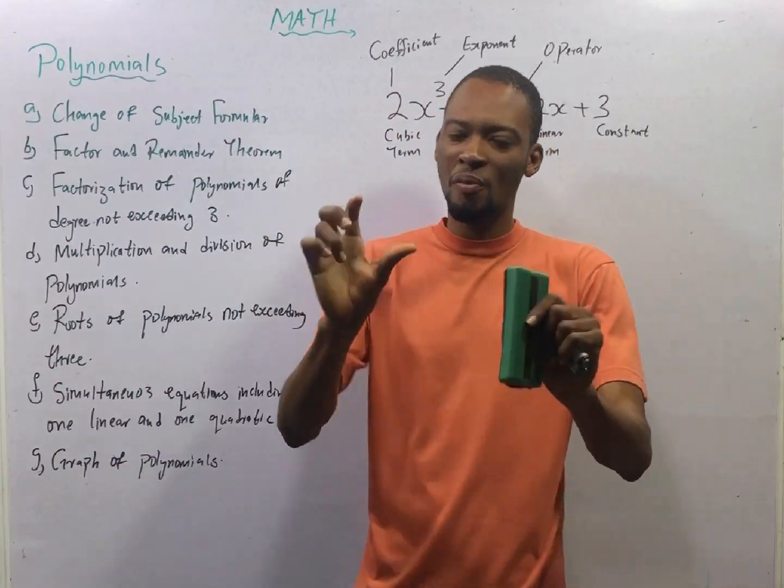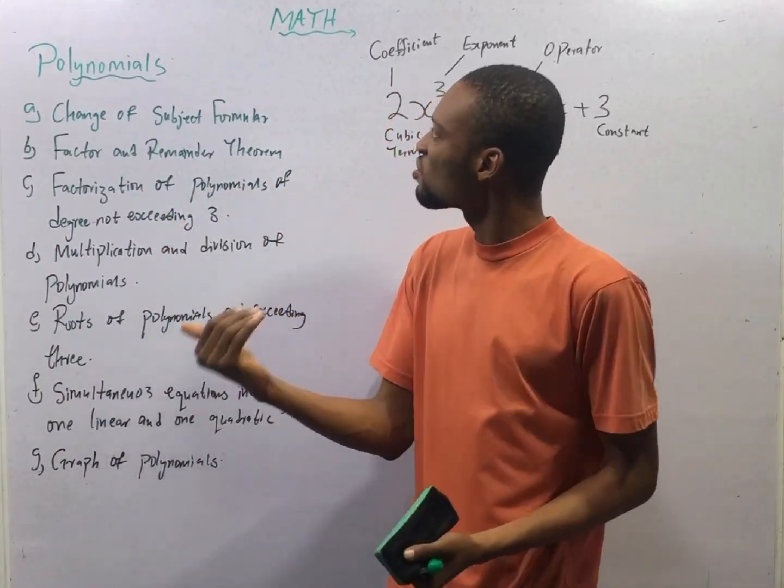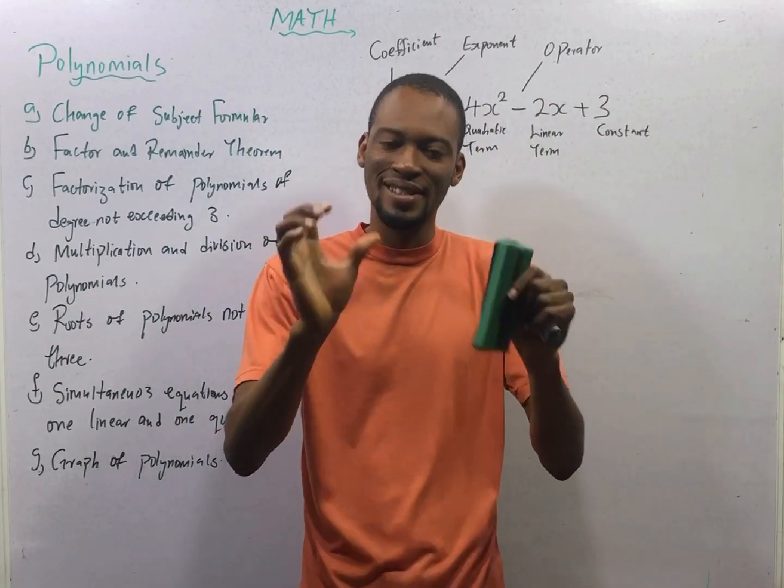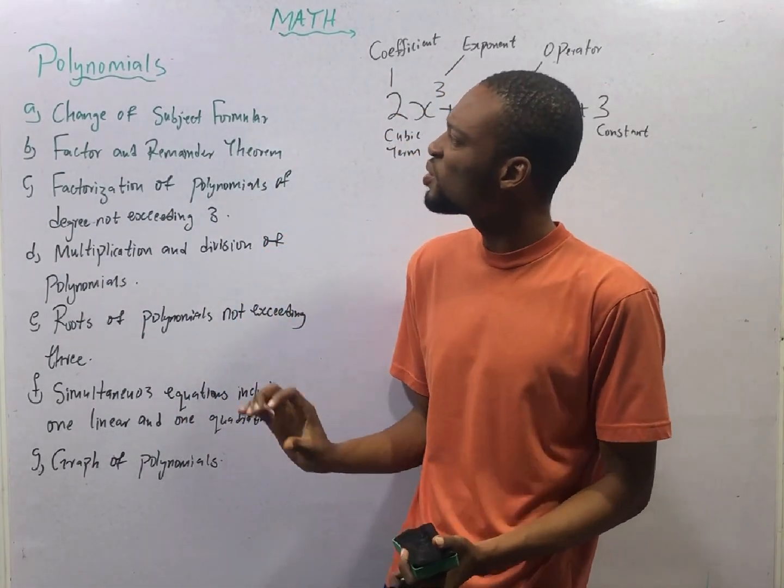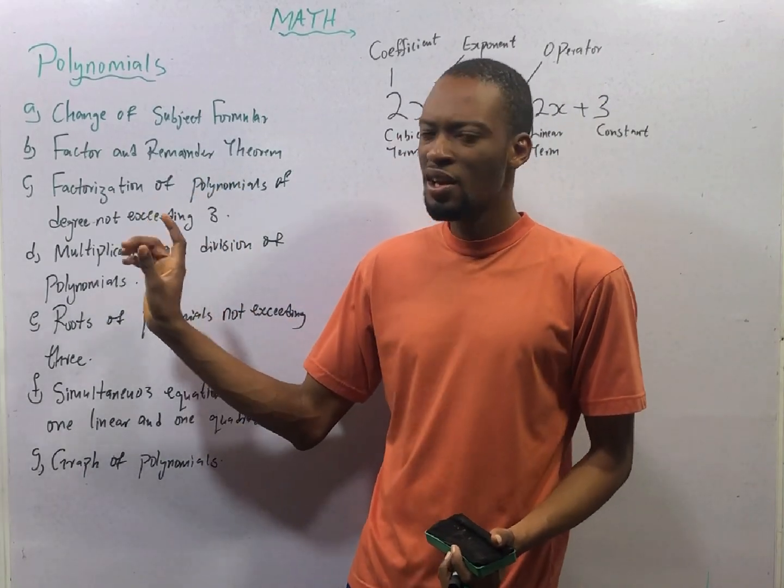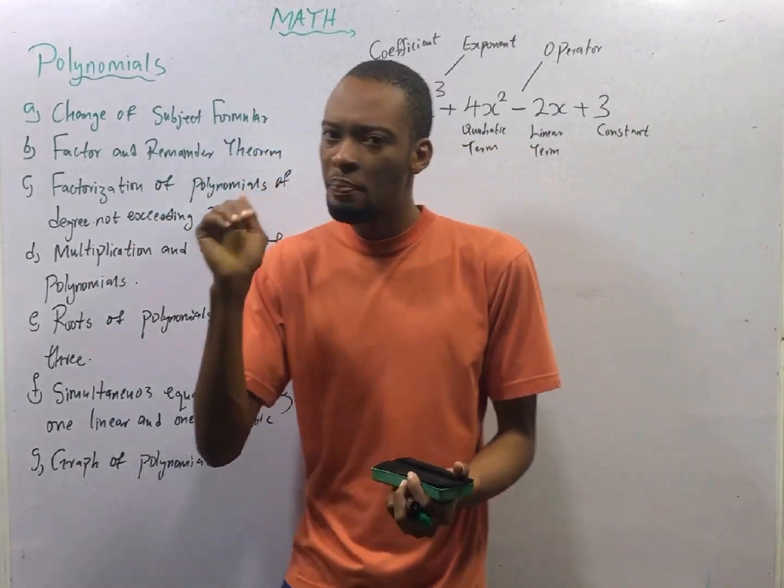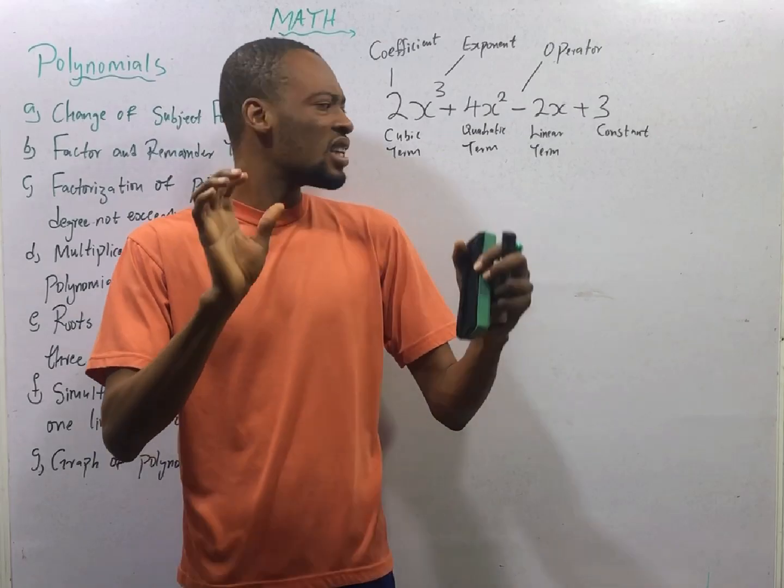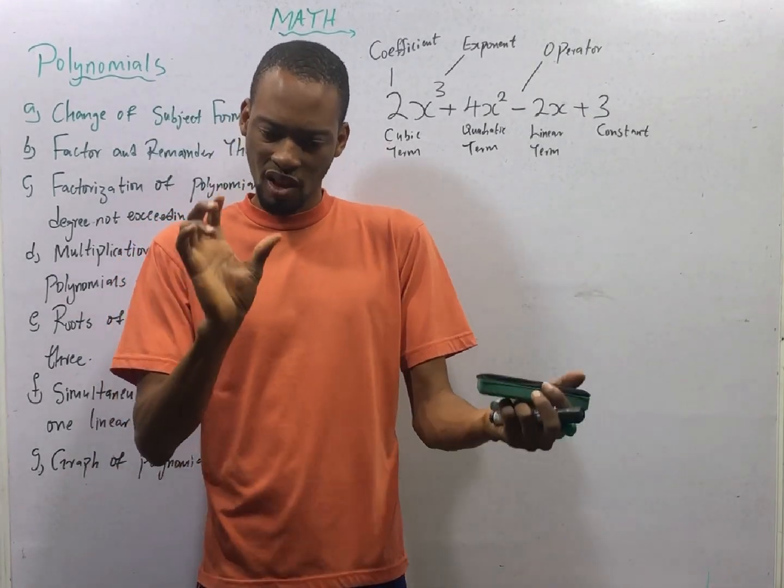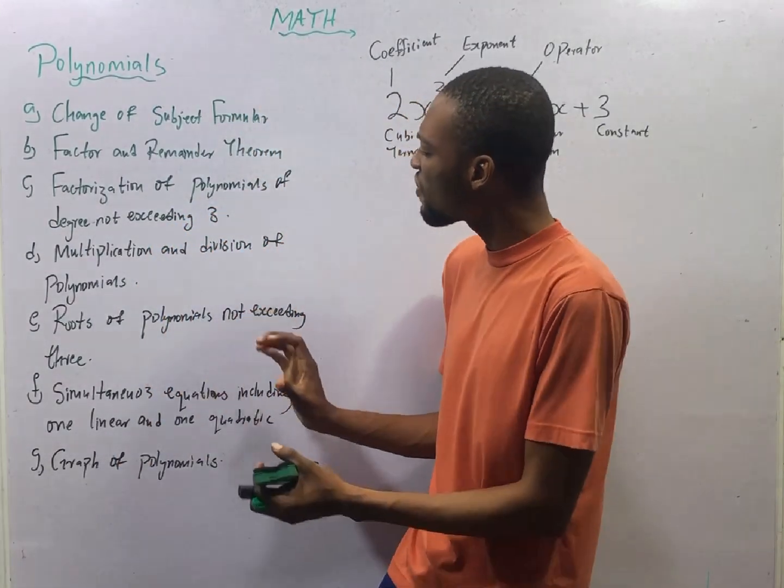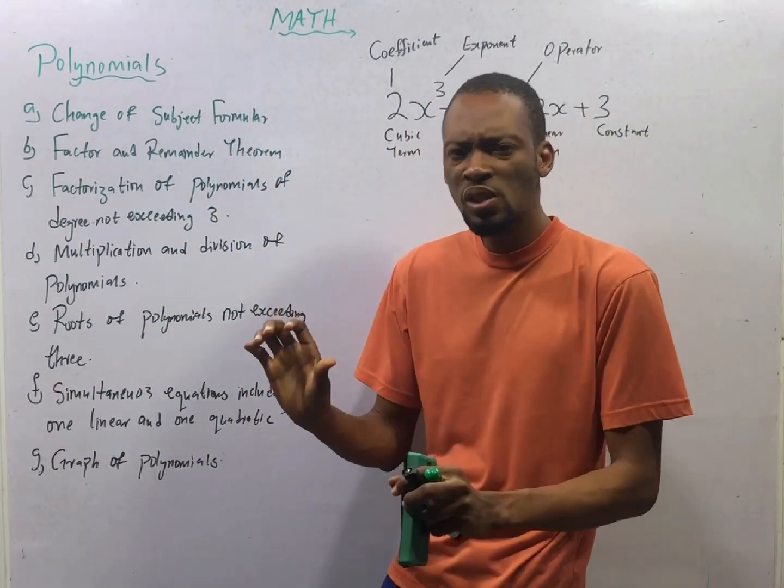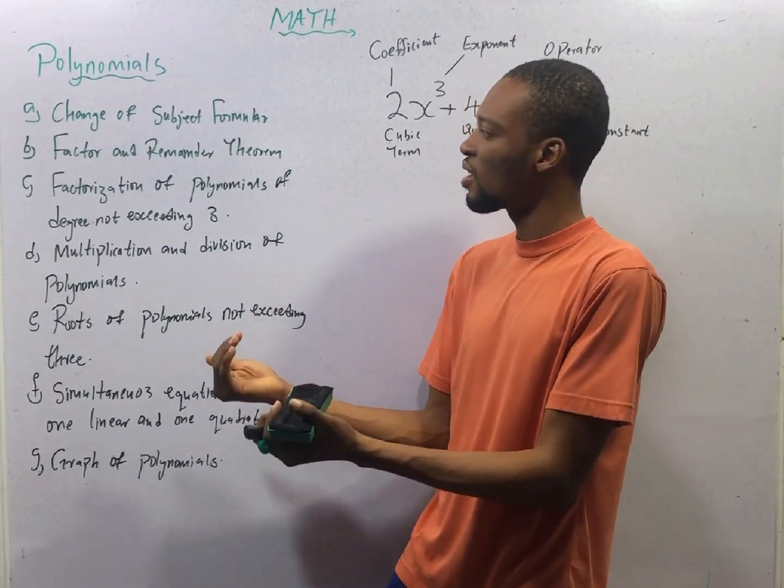This is episode number 27 of the 120 days to JAMB mathematics with Flash Isaac. In this episode, we shall be introducing polynomials. From this episode to episode number 35 is all about polynomials. At the end of episode number 35, we will make sure that everything is covered so long polynomials is concerned.